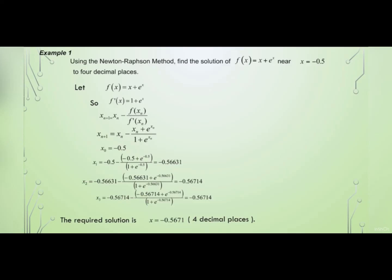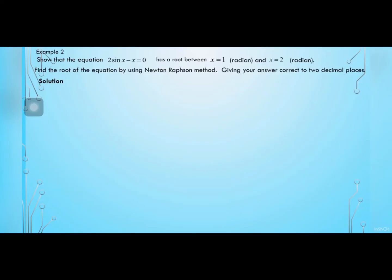As you can see, the first approximation was minus 0.5, then a better approximation of minus 0.5671 was found, which is more accurate but still approximately equal to the root of f(x) equals x plus e power x.